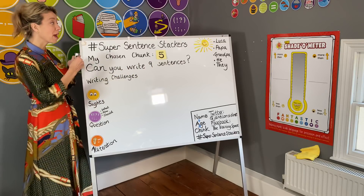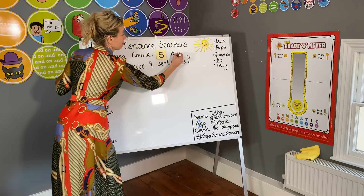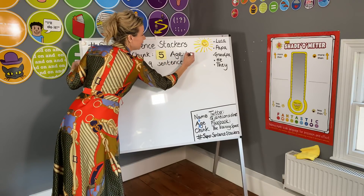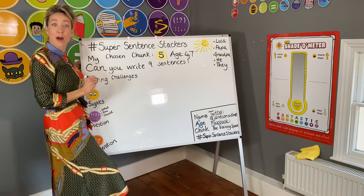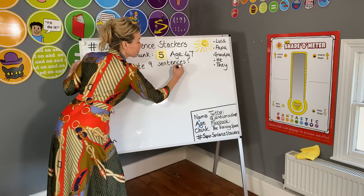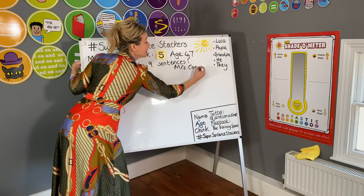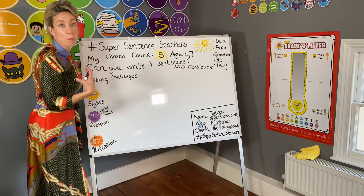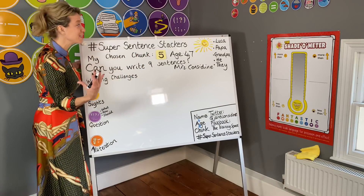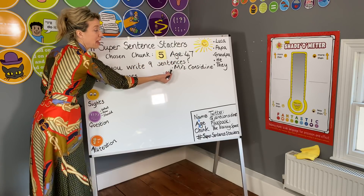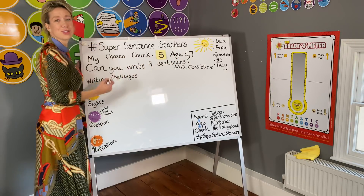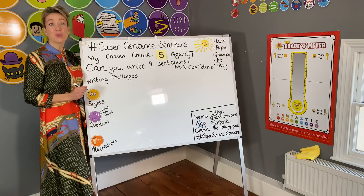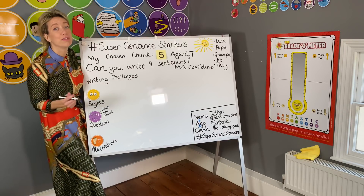If I was going to hand in my chunk today, I'd write on my piece of paper: chosen chunk five, then my age — this is very hard for Mrs. C but I am going to tell you — and then I'd write my name, Mrs. Considine. All of those things need to be on your piece of paper. Obviously not my age and not my name — it would say something like: age eight, Aaron, chosen chunk two, hashtag Super Sentence Stackers. Then I can find your work — not just Aaron's, all of your work.